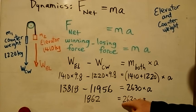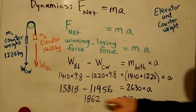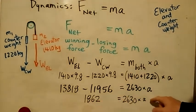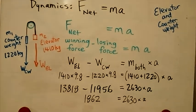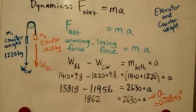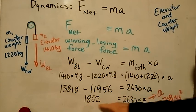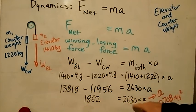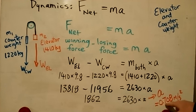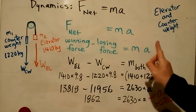I just need to divide both sides by 2630 and I'll get a. And I'll do that right now. And we get a is just 1862 divided by 2630, which is 0.708 meters per second squared, or 0.71 meters per second squared would be fine. And that would be elevator going down or the counterweight going up.